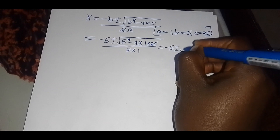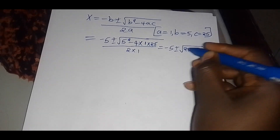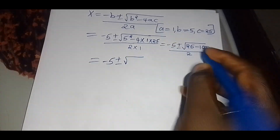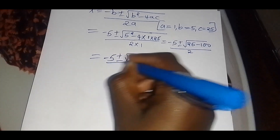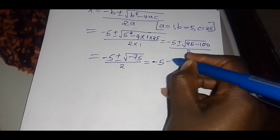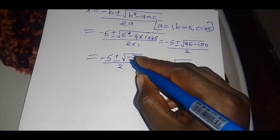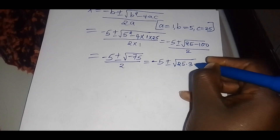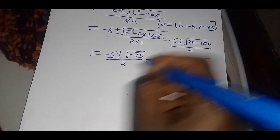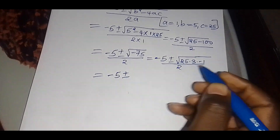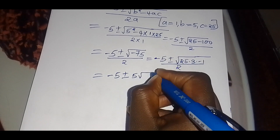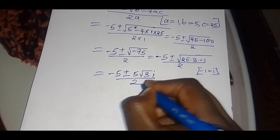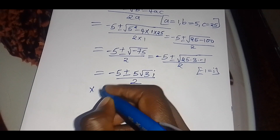This gives us negative 5 plus or minus the square root of 25 minus 100, which is negative 75, divided by 2. We can write negative 75 as 25 times 3 times negative 1, so the square root becomes 5 times the square root of 3 times the square root of negative 1, which equals i.